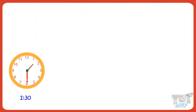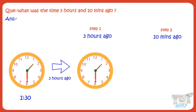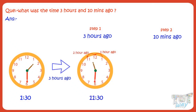Now, let's calculate what was the time 3 hours and 10 minutes ago. We will calculate the time in two steps. Let's first see what was the time 3 hours ago, and then see what was the time 10 minutes ago. It's 1:30. One hour ago the time was 12:30, one more hour ago it was 11:30, and one more hour ago it was 10:30. So 3 hours ago, it was 10:30.